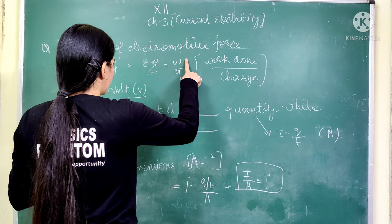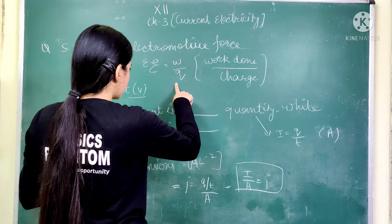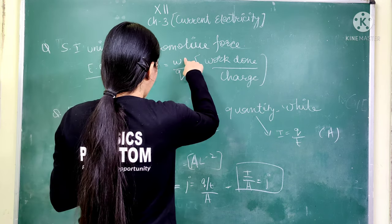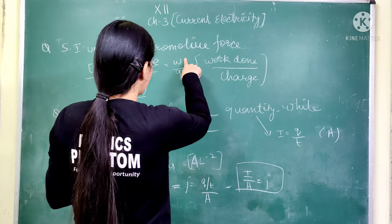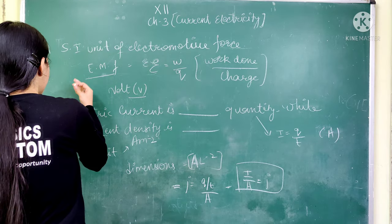Here W stands for work done and Q stands for charge. So the formula E = W/Q means work done per unit charge. This is an important question — please mark it.